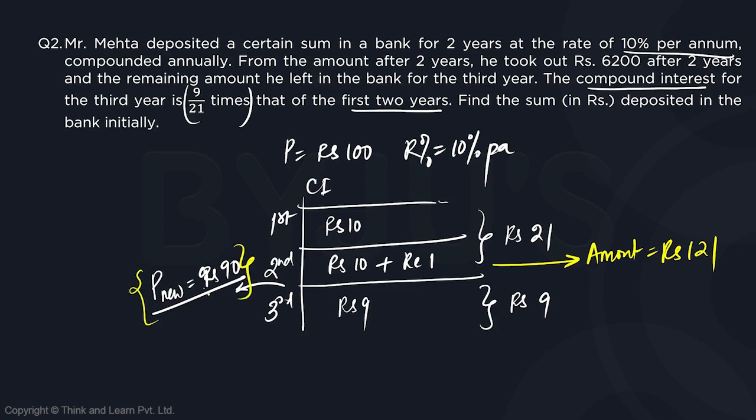At the beginning of the third year, the principle is rupees 90. So can we say he is going to take out 31 rupees from here? 121 minus 90.